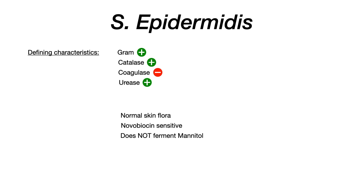If you're going in order, you should have watched the Staph aureus video first. On exams, the test writer is going to ask you to differentiate Staph aureus from Staph epidermidis, because both aureus and epidermidis are cocci — they appear spherical and round, they cluster together. So if you look at them under a microscope, you really can't tell the difference. The test writer will give you coagulase positive or negative, and you'll have to figure out which one it is, or they'll give you the clinical sequelae that these pathogens cause.